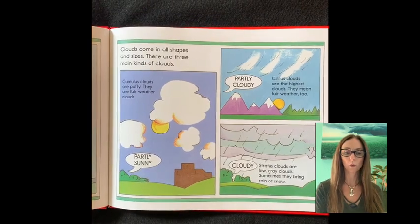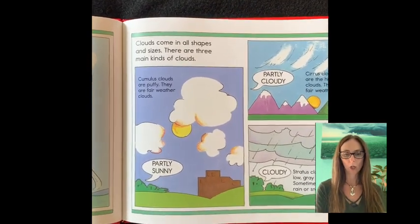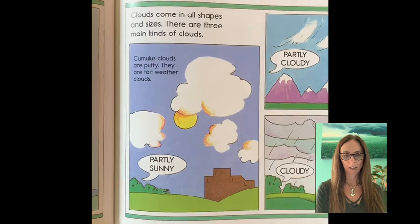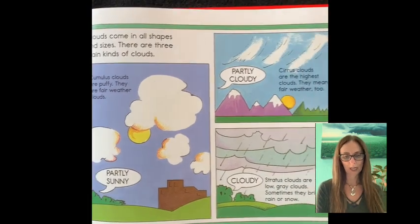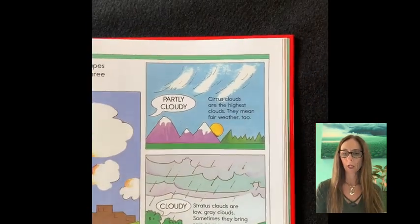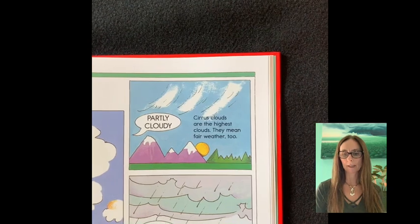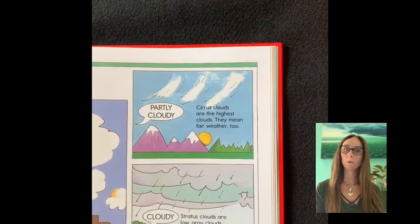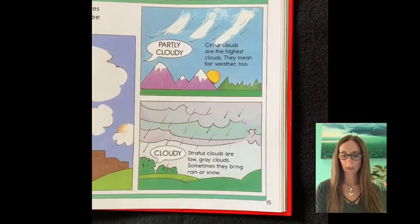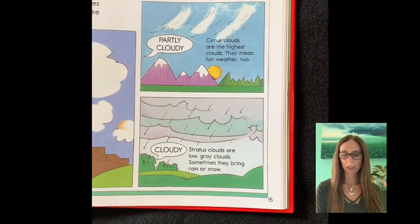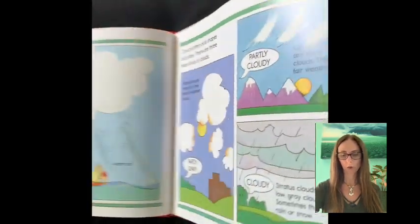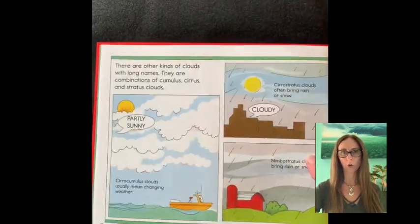Clouds come in all shapes and sizes. There are three main kinds of clouds. Cumulus clouds are puffy. They are fair weather clouds. Partly sunny. Cirrus clouds are the highest clouds. They mean fair weather too. Partly cloudy. Stratus clouds are low gray clouds. Sometimes they bring rain or snow.